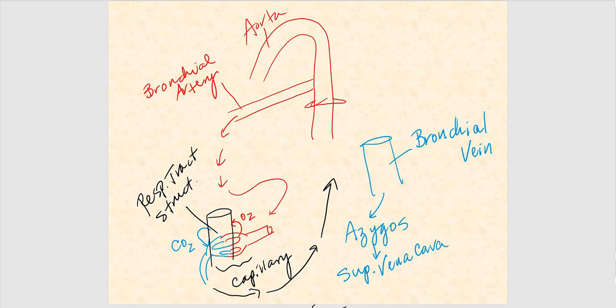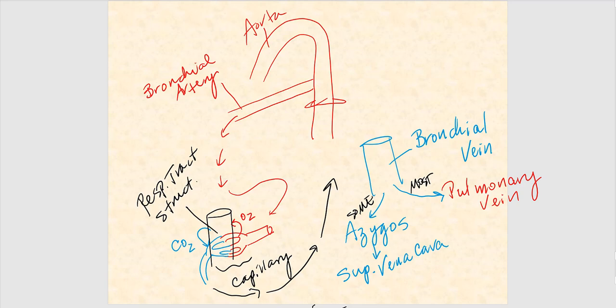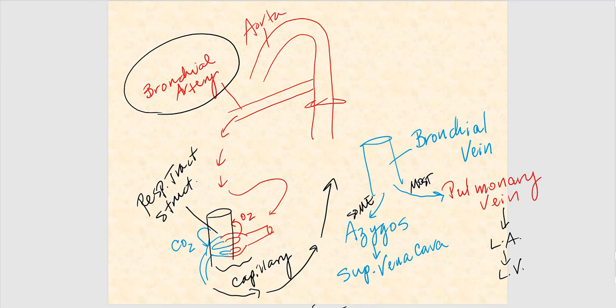Most of the blood in the bronchial vein does not drain into the azygous vein — it actually drains into the pulmonary vein, resulting in a mixing of deoxygenated bronchial blood with oxygenated blood from the pulmonary vein. Some does drain into the azygous, which ultimately drains into the superior vena cava and then the right atrium. From the pulmonary veins, blood drains to the left atrium and left ventricle. This confirms bronchial circulation is part of the systemic circuit.